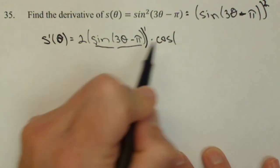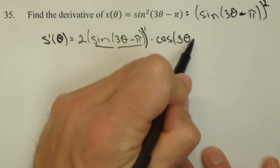Again, I leave the inside, 3 theta minus pi.